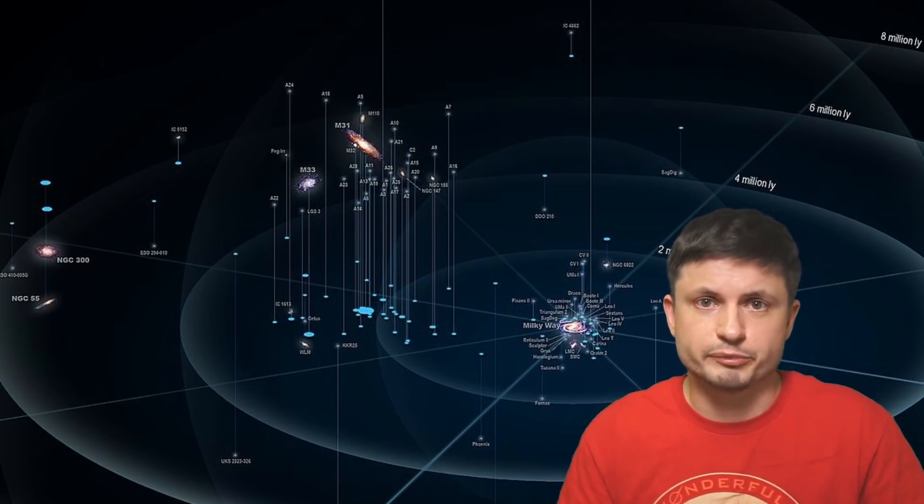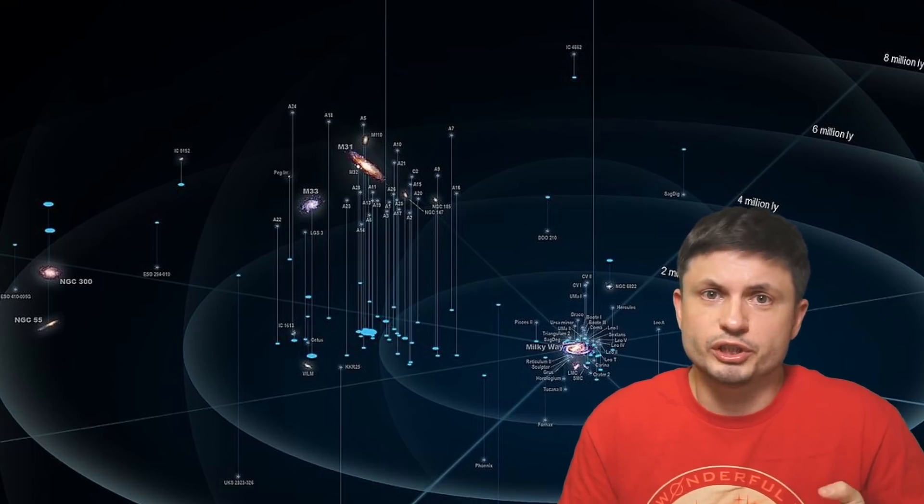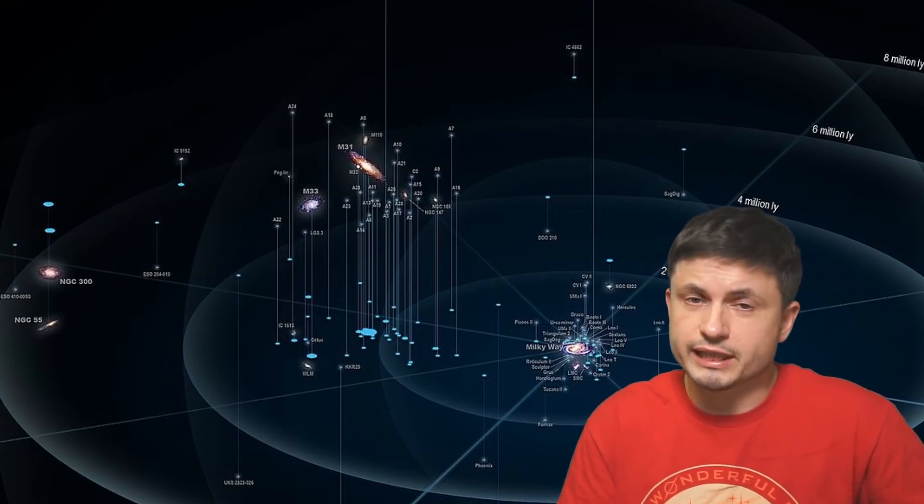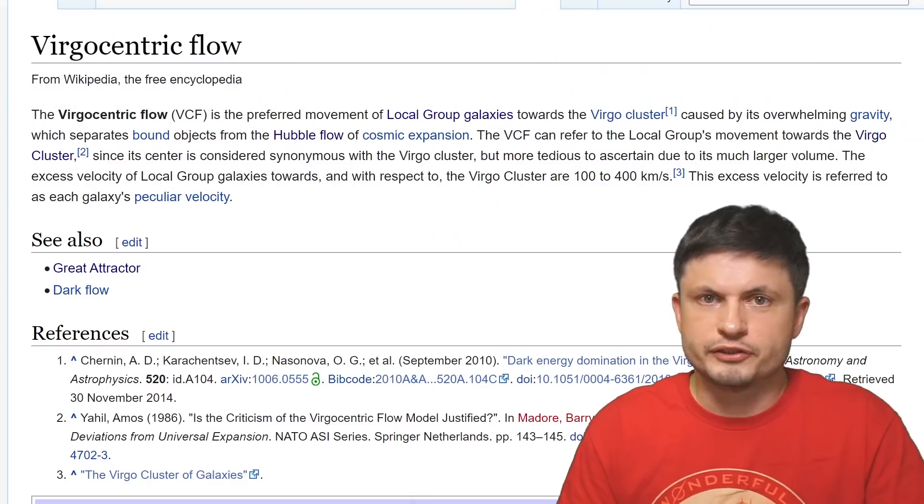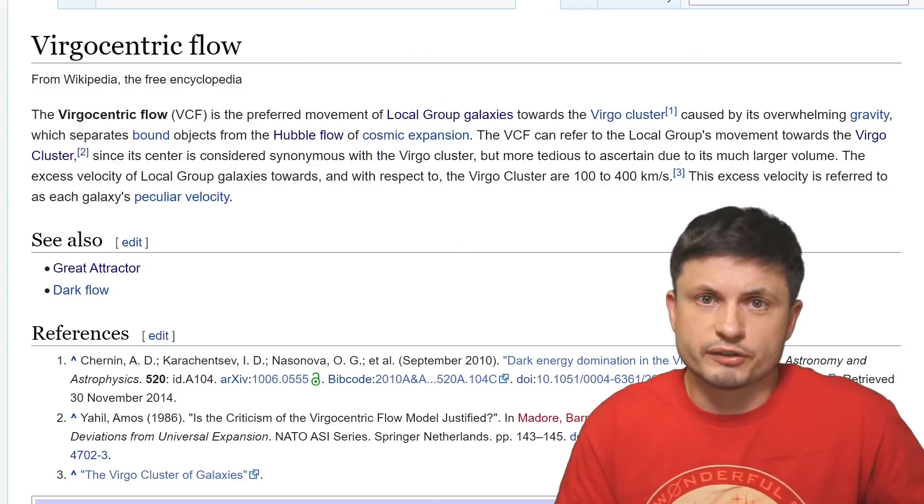But Virgo Cluster, located around 55 million light years away from us, is an extremely interesting opportunity for us to study all of this. First of all, it's obviously the nearest massive cluster. It's actually so massive that it produces gravitational pulling effect on the entire Local Group, reducing the overall velocity of all of the galaxies here by roughly around 10 percent. This is referred to as the virgocentric flow.